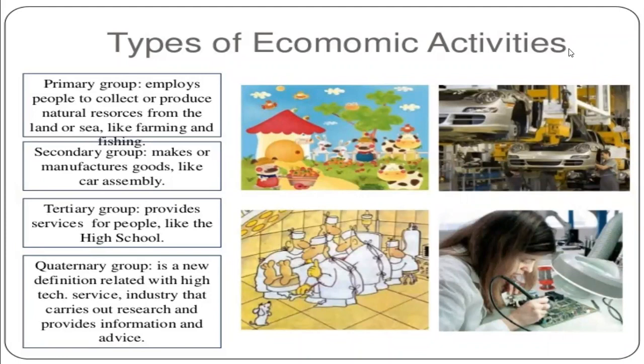Types of economic activity. We divide economic activities into three categories: primary group, secondary group, and tertiary group. Agriculture is an activity directly related to the extraction and production of natural resources, so it is a primary activity. It involves direct contact with nature, employing people to collect and produce natural resources from land or sea, like farming and fishing — these come in the primary group.